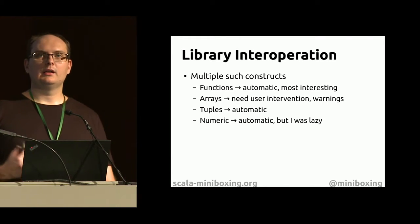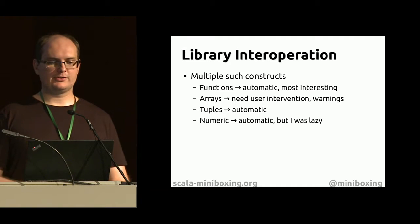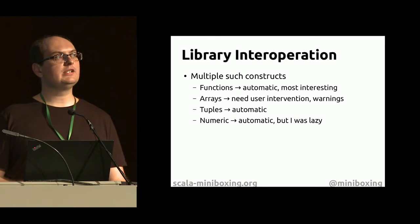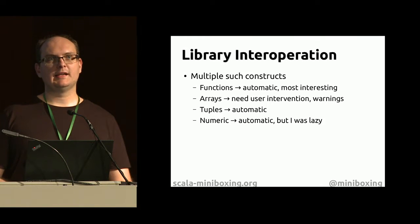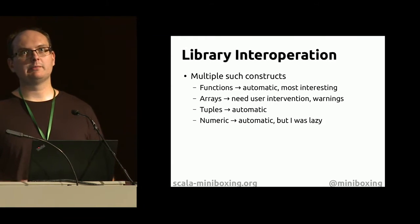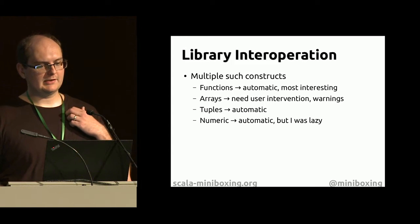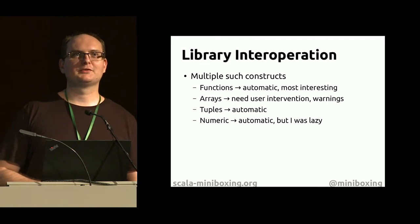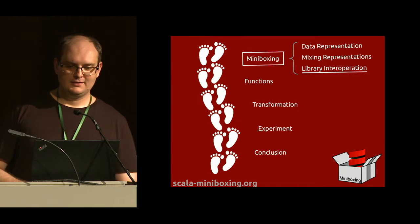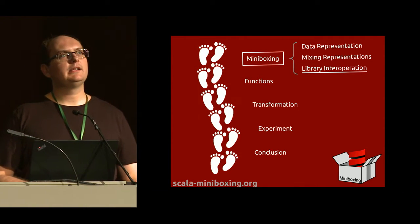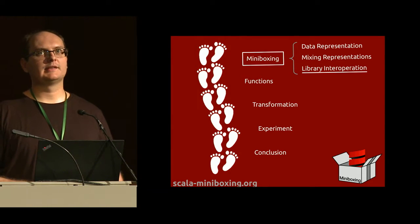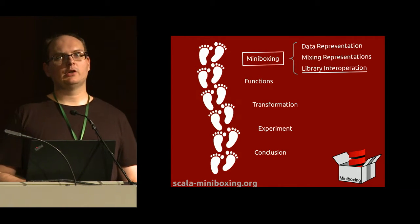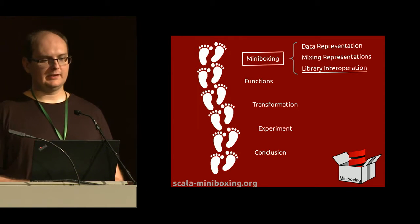Functions are transformed automatically to improved versions. Arrays, as you've seen, need user intervention because mutable state has problems with aliasing, so it would not be correct to automate it. Tuples are optimized automatically. Numeric could be optimized automatically, but it just warns you and you have to do it manually. We've seen why we need different constructs from what the Scala library provides.